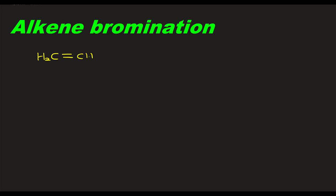Hello everyone. Let's talk about alkene bromination. Alkene, ethyne, bromine is 1,2-dibromoethane.